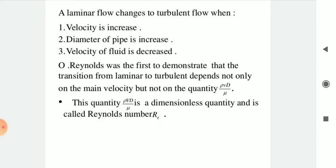Reynolds was the first to demonstrate that the transition from laminar to turbulent flow depends not only on the mean velocity, but on the quantity rho·V·d divided by mu. This quantity, rho·V·d divided by mu, is a dimensionless quantity called the Reynolds number, Re.